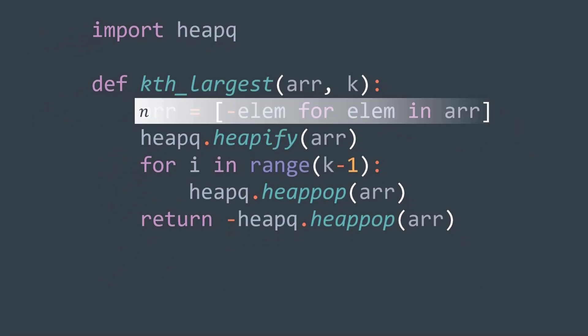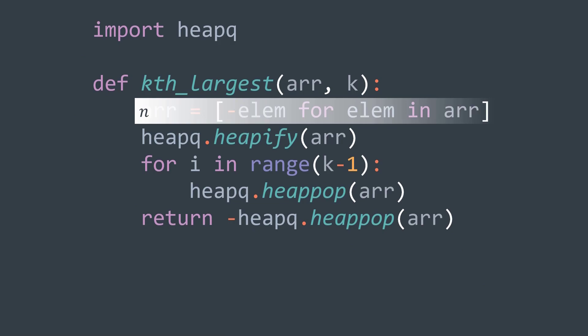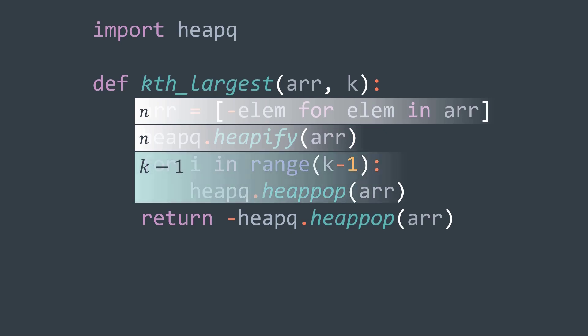For the time complexity, we have n to build a new array with reversed values, and to heapify it, go check the video to know why, and then we have k-1 iterations. Each iteration costs O of log n to extract. After the loop, we have O of log n to extract one more time.